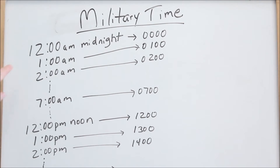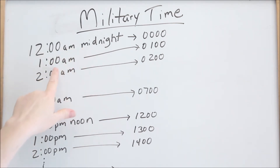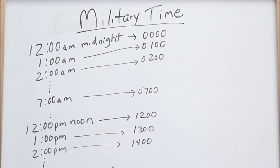Today we're doing military time. Over here on the left hand side, I have standard time. Our day starts off with 12 a.m., which we call midnight. Then we go to 1 a.m., 2 a.m., 3 a.m., so forth to 7 a.m., all the way until we get to 12 p.m., which is noon. Then we go to 1 p.m., 2 p.m., so forth, all the way to 11 p.m. Now we're back around to midnight again — that's a 24-hour period.